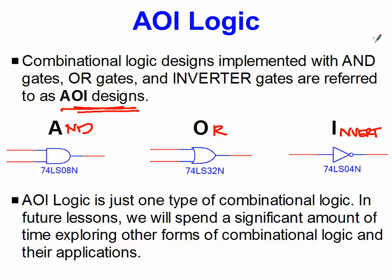Now remember, AOI logic is just one type of combinational logic. There's all kinds of other types of gates, such as XOR gates, XNOR gates, NAND gates, all kinds of other things we'll be getting into later on down the road, but to start with, you have to have a good grasp of the basic AOI logic and how it's implemented. And that concludes our lesson for today.